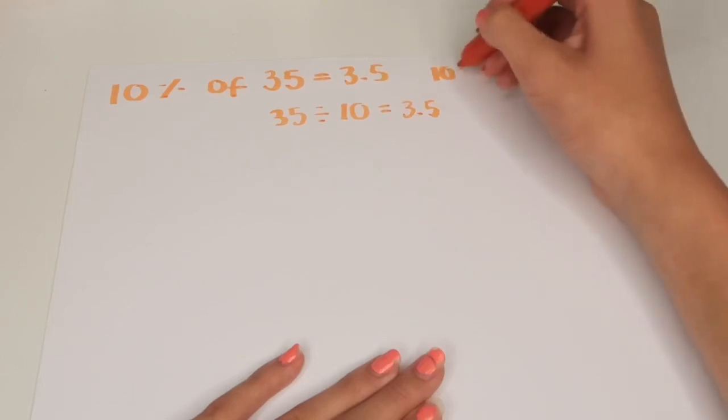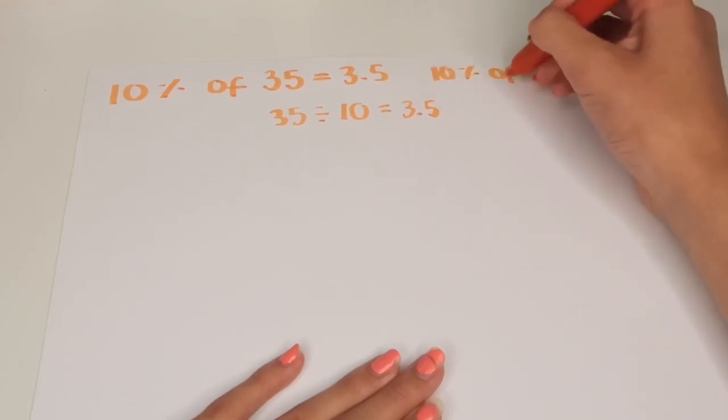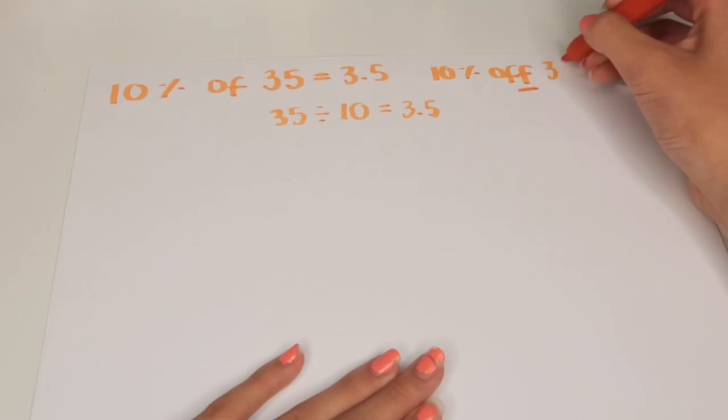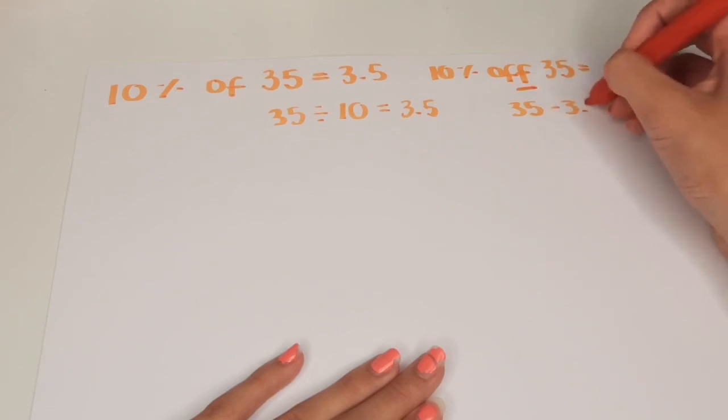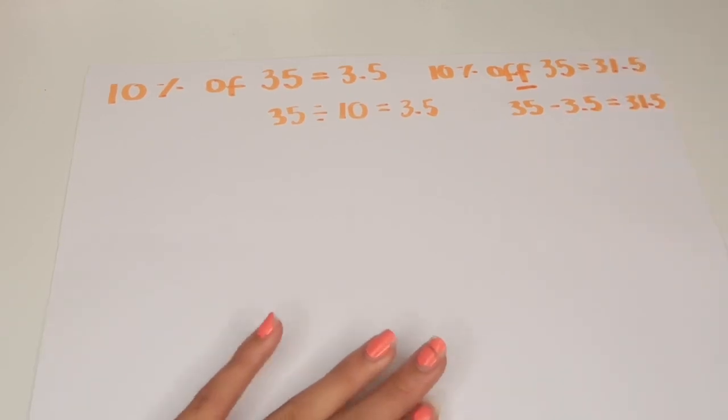Now the question is asking what is 10% off of 35? So what we would do is we would do 35 minus the 10% which we just found out is 3.5. So the answer of what is 10% off of 35 is 31.5.